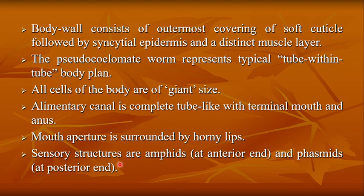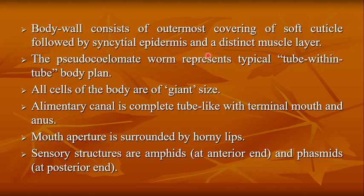The body wall consists of an outermost covering of soft cuticle, followed by syncytial epidermis, and a distinct muscle layer. Syncytial means a single cell containing one or more than one nucleus, so syncytial epidermis and a distinct muscle layer are present.